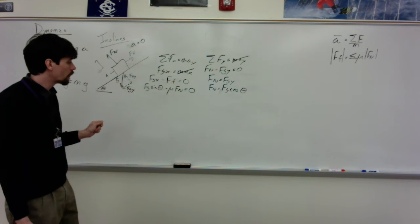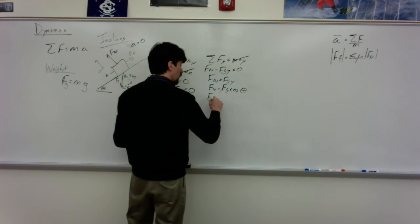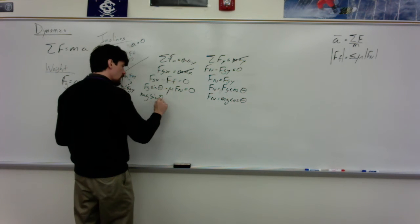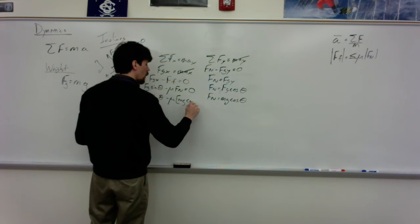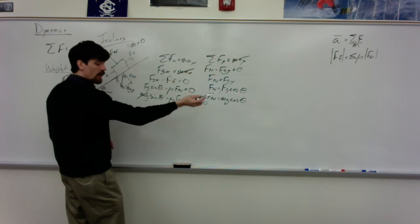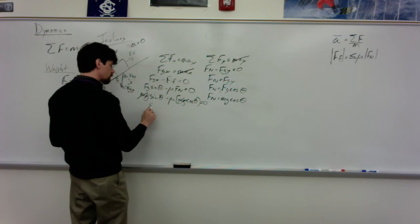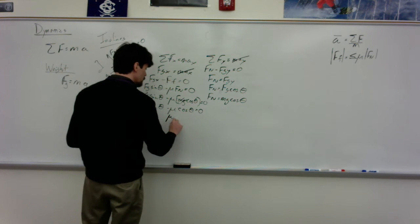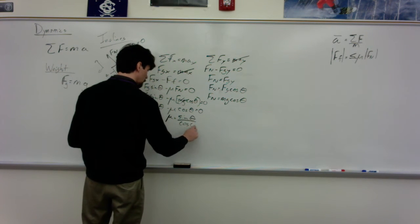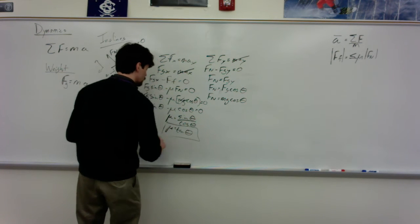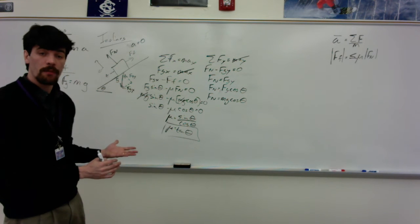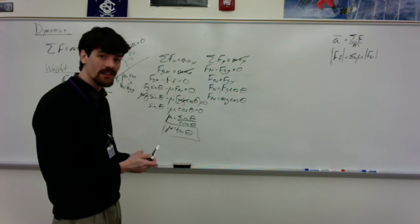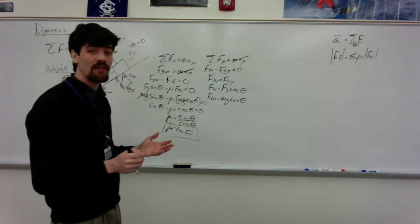Force normal equals mg cosine theta. Substituting back: mg sine theta minus mu times mg cosine theta equals zero. Mass and g both fall out, leaving sine theta minus mu cosine theta equals zero. Solving for mu gives us mu equals tangent theta. Notice I used no numerical values — only quantities. That's a big thing for AP multiple choice and free response questions.